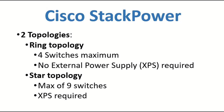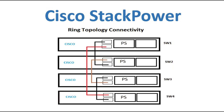In the star topology you need an external power supply and each switch will connect to it. This is the ring topology — I have colored connections just to show where to connect each power stack cable from the four switches.